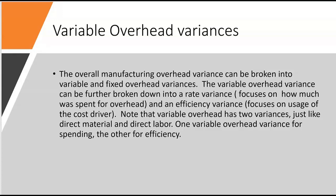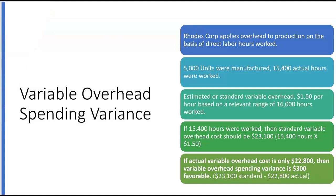Much like we saw with direct material and direct labor — there's a direct material spending variance and a direct material efficiency variance — it's going to be the same situation for variable overhead: one variable overhead variance for spending and one for efficiency. Then when we get to fixed overhead variances, there are two of those as well — one for spending and one for efficiency. We're going to start with the variable overhead variances, specifically the one that focuses on spending.